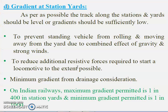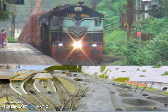Gradients at station yards are very flat and are usually provided at stations. This prevents standing vehicles from rolling and moving away from the yard due to the combined effect of gravity and strong winds. In the next class, we will be covering grade compensation and super elevation, along with other geometric elements which are to be designed. Thank you.